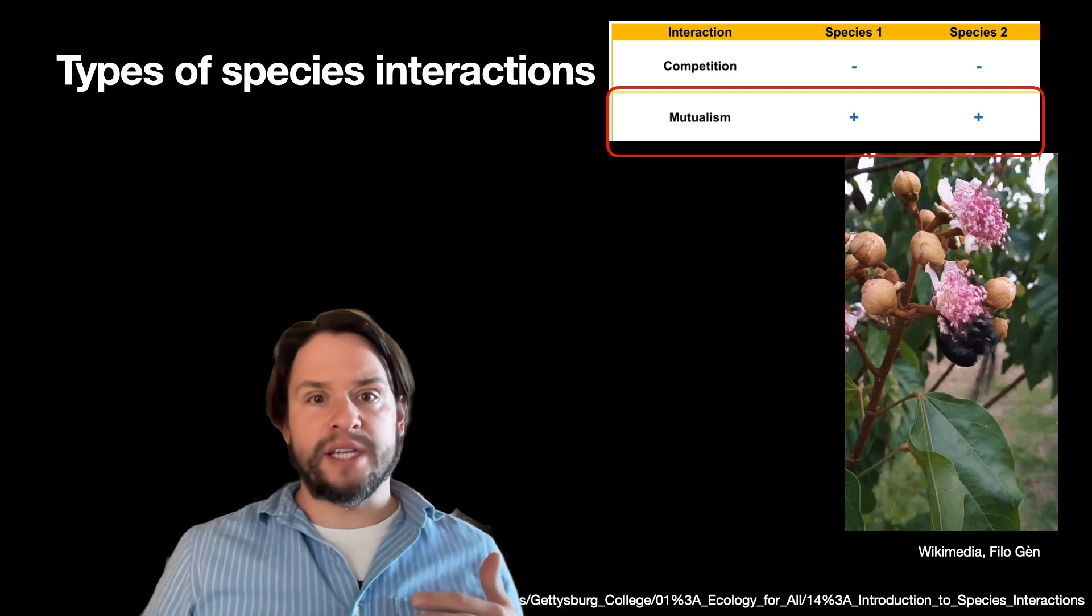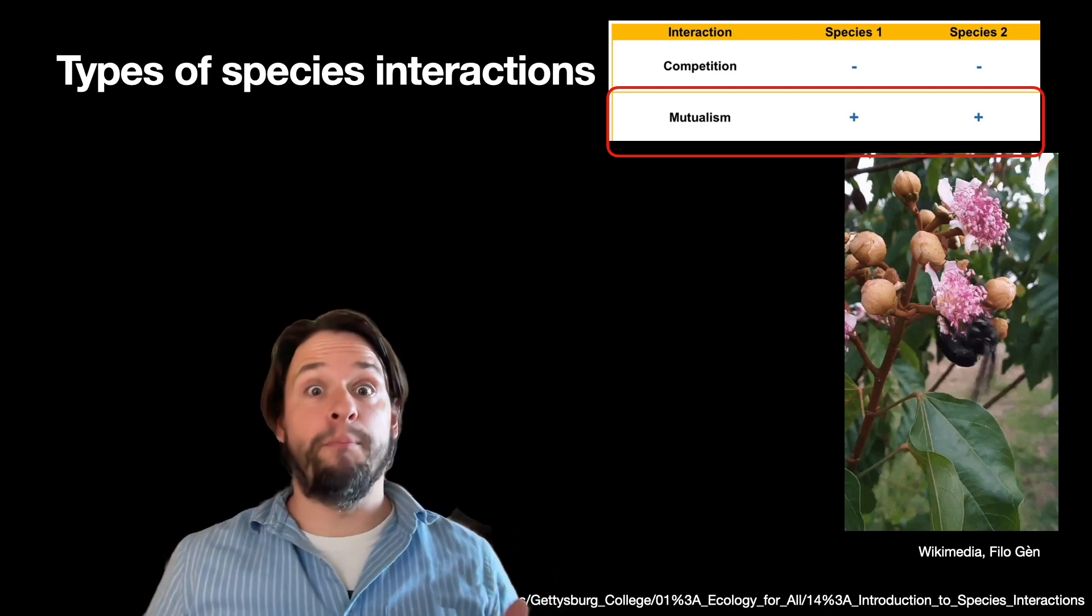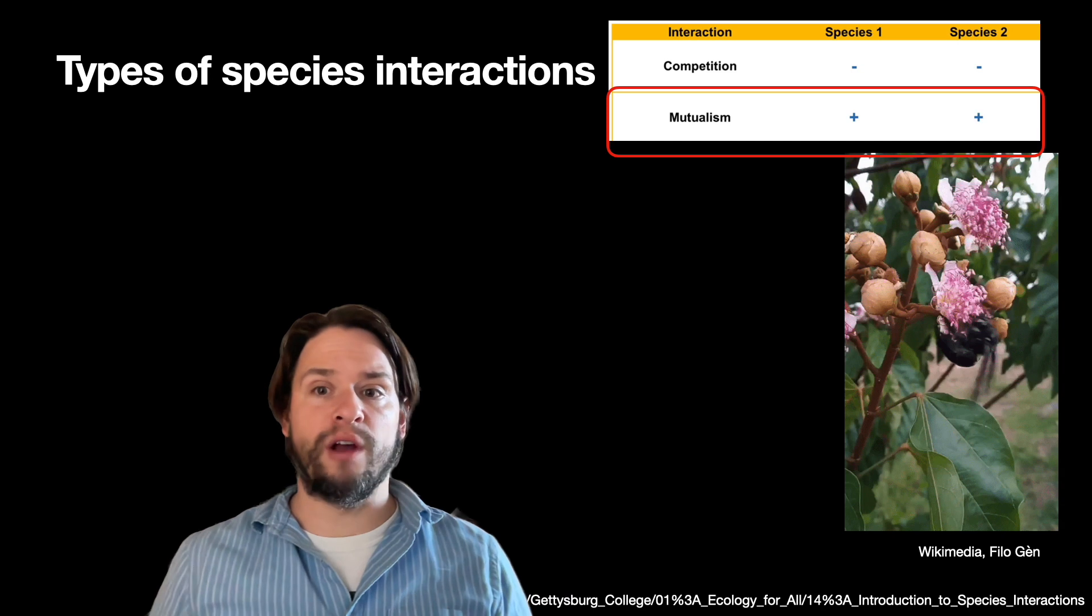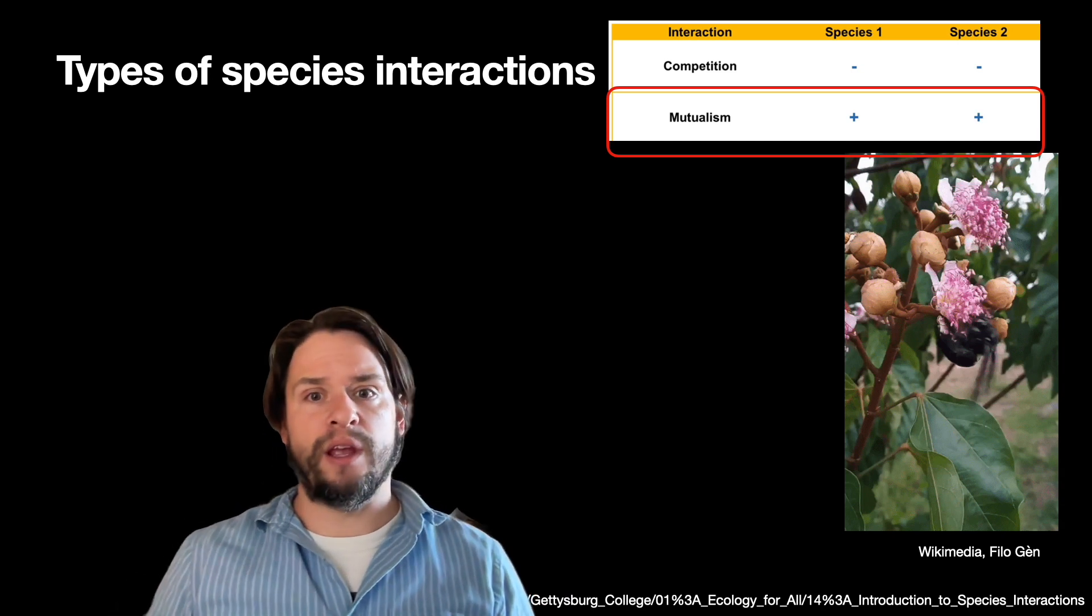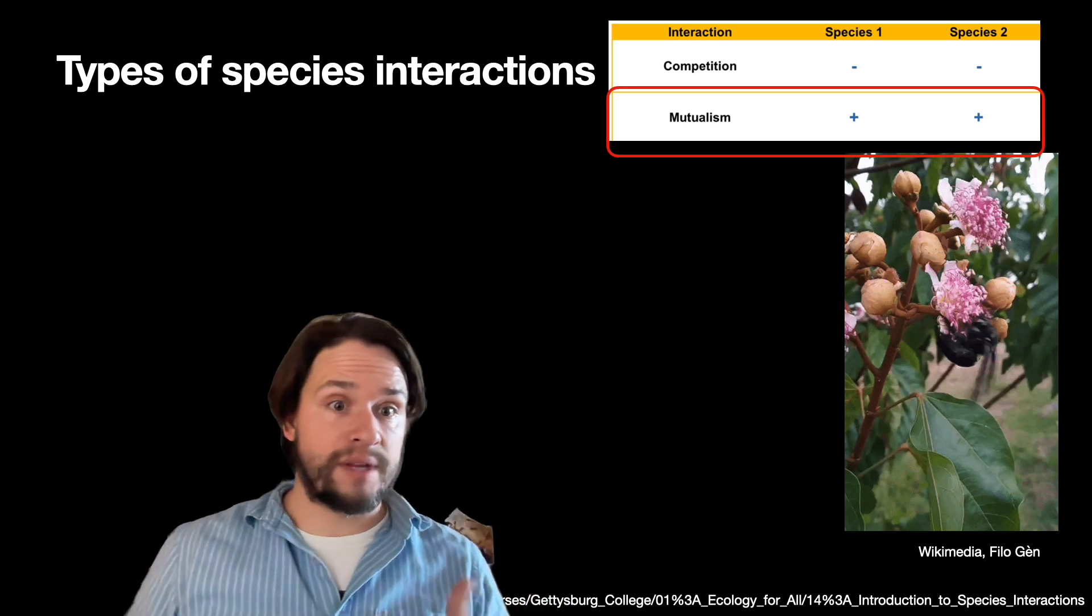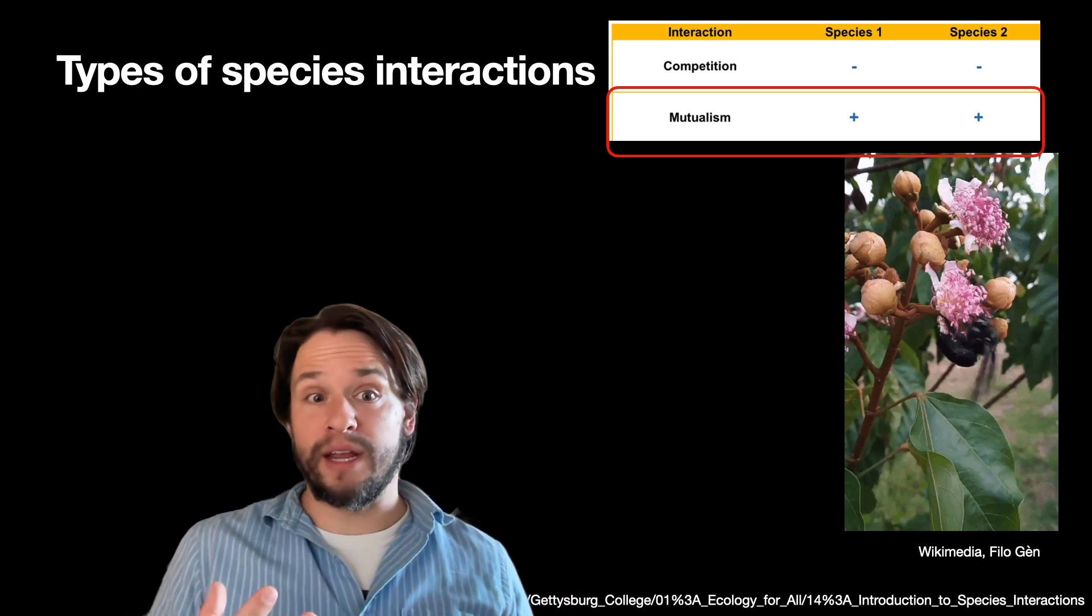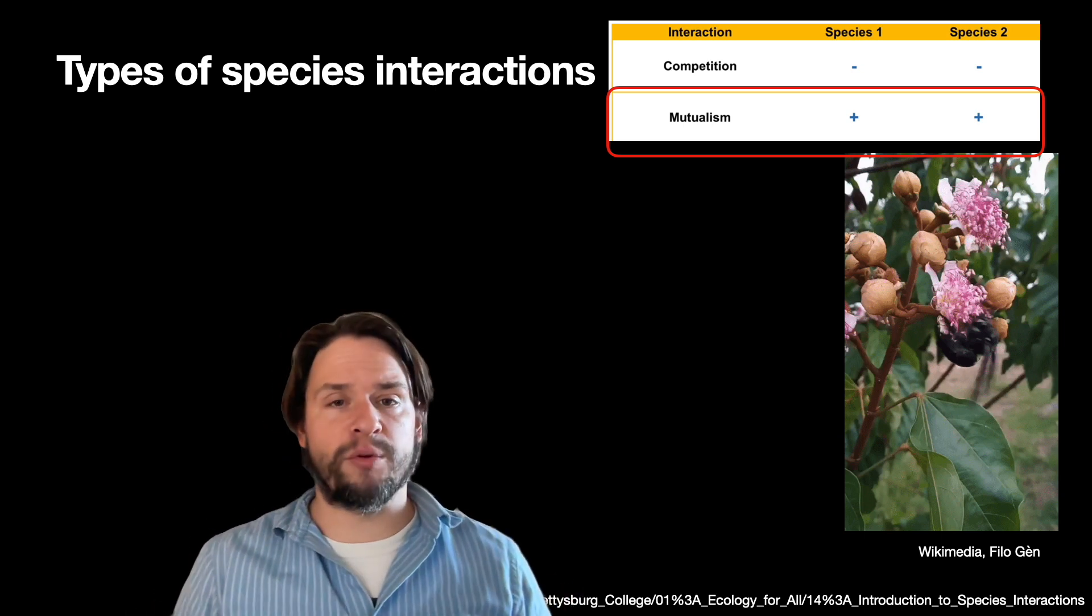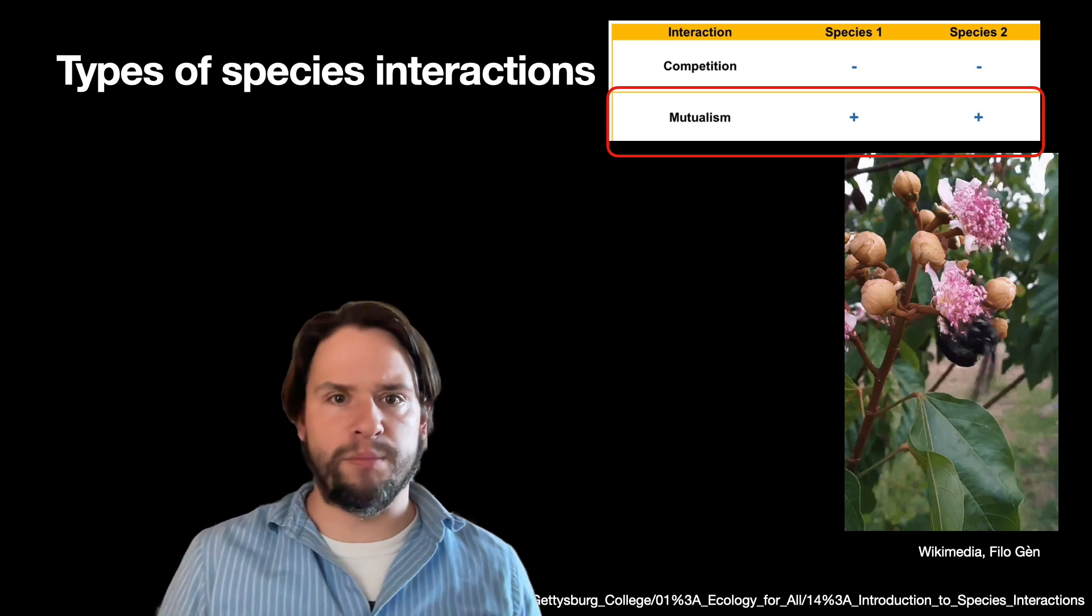So if we think of the opposite of competition, we might think of interactions where both partners benefit, and we often call these mutualisms. So for example, the interaction between plants and pollinators: the plants get a reproductive benefit and the pollinators get food, so their own fitness is improved. That is a mutual benefit to both partners.